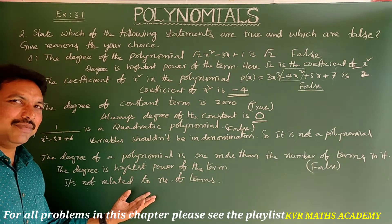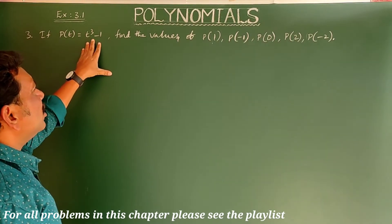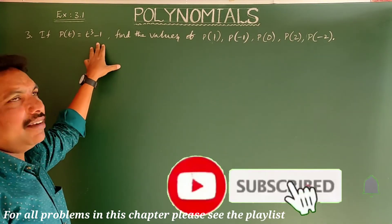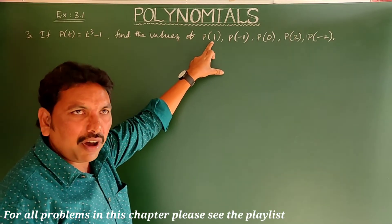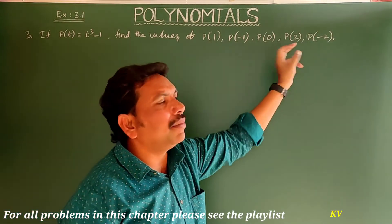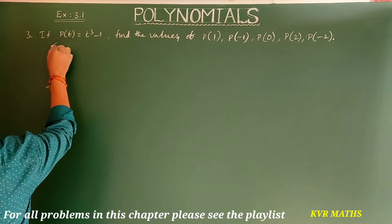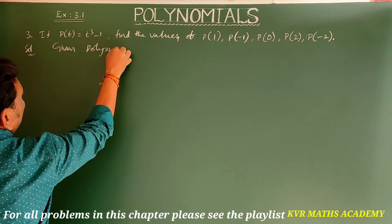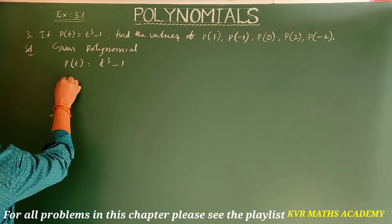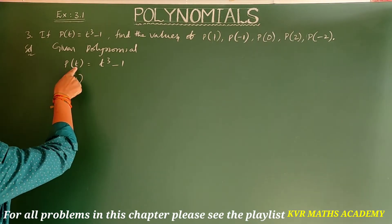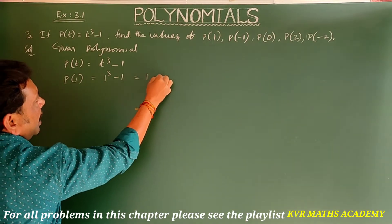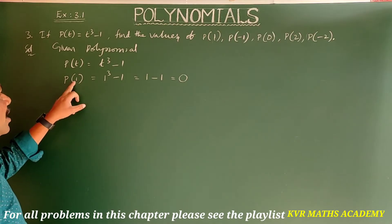Third question: if p(t) = t³ - 1, find the values of p(1), p(-1), p(0), p(2), and p(-2). In the given polynomial, we substitute each value in place of t. p(1) = 1³ - 1 = 1 - 1 = 0. p(-1) = (-1)³ - 1 = -1 - 1 = -2.